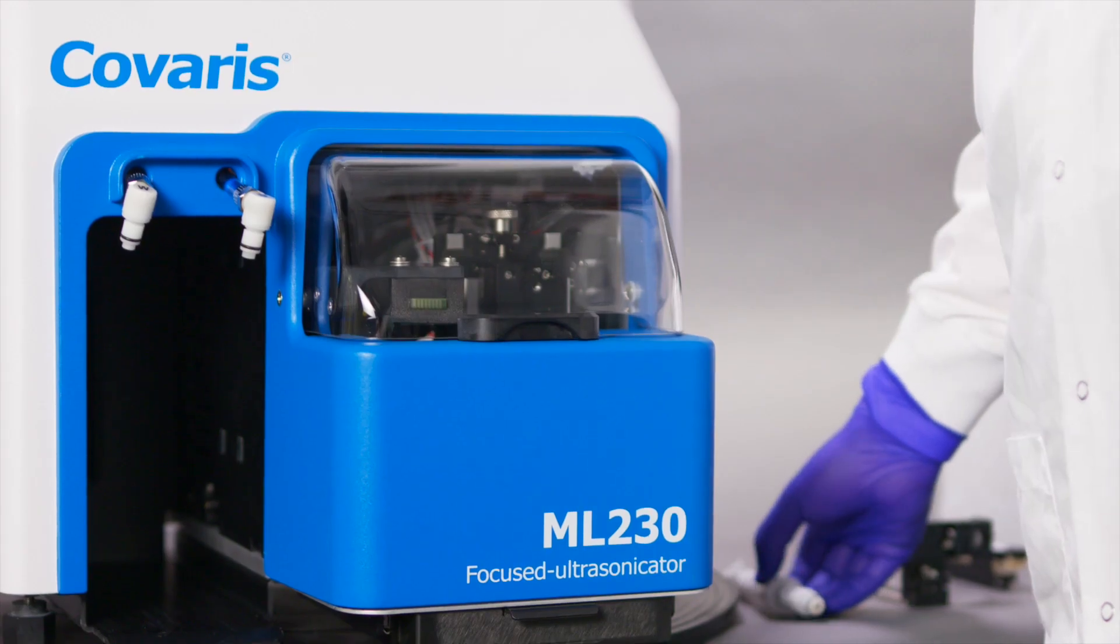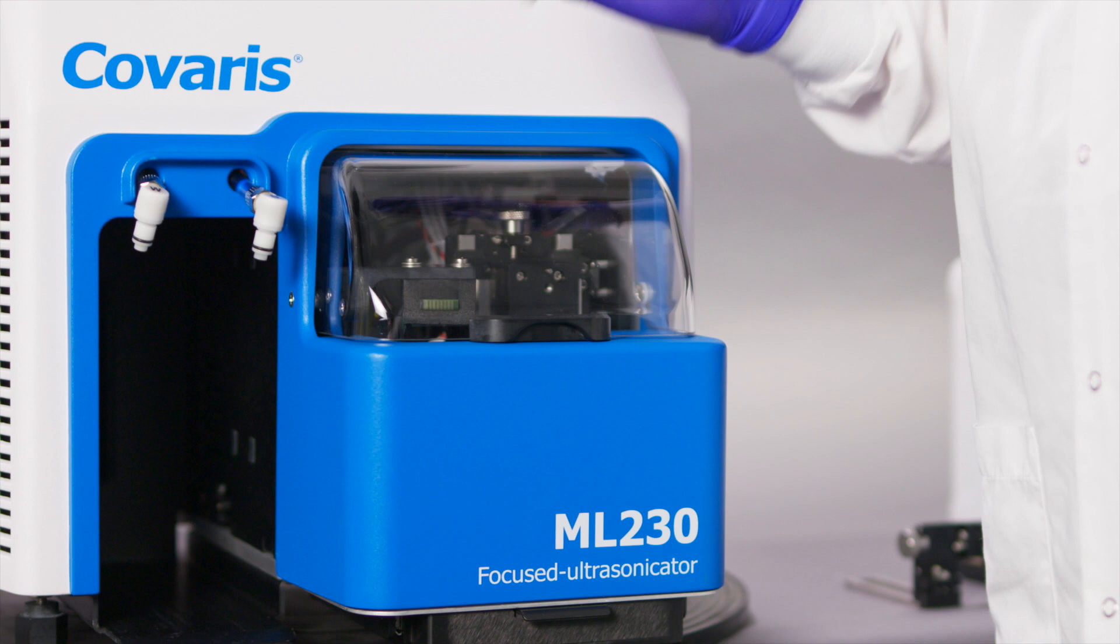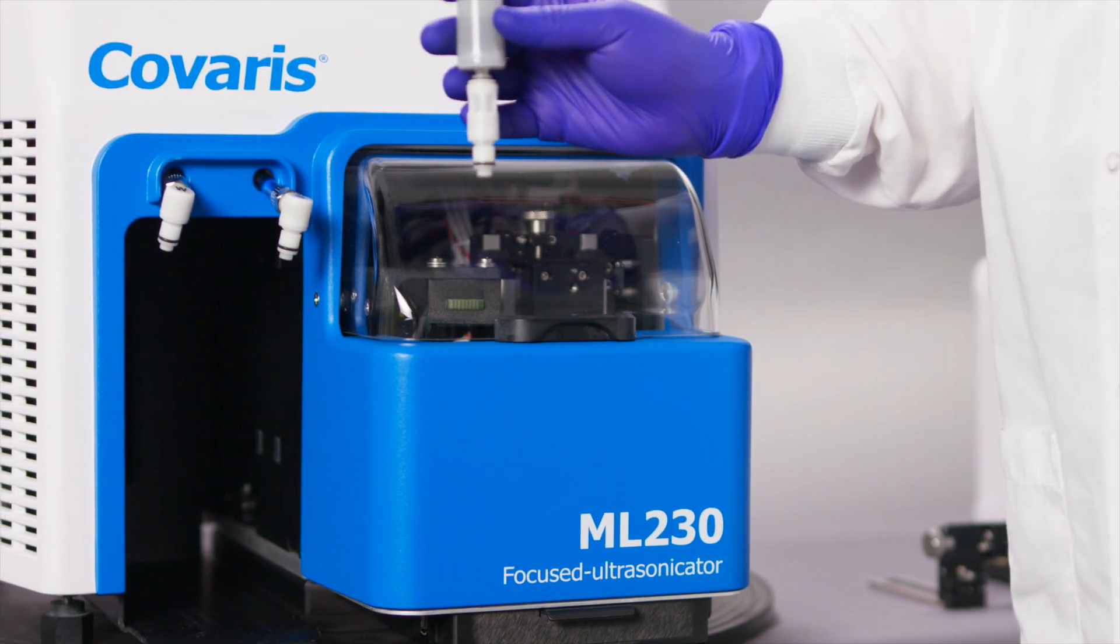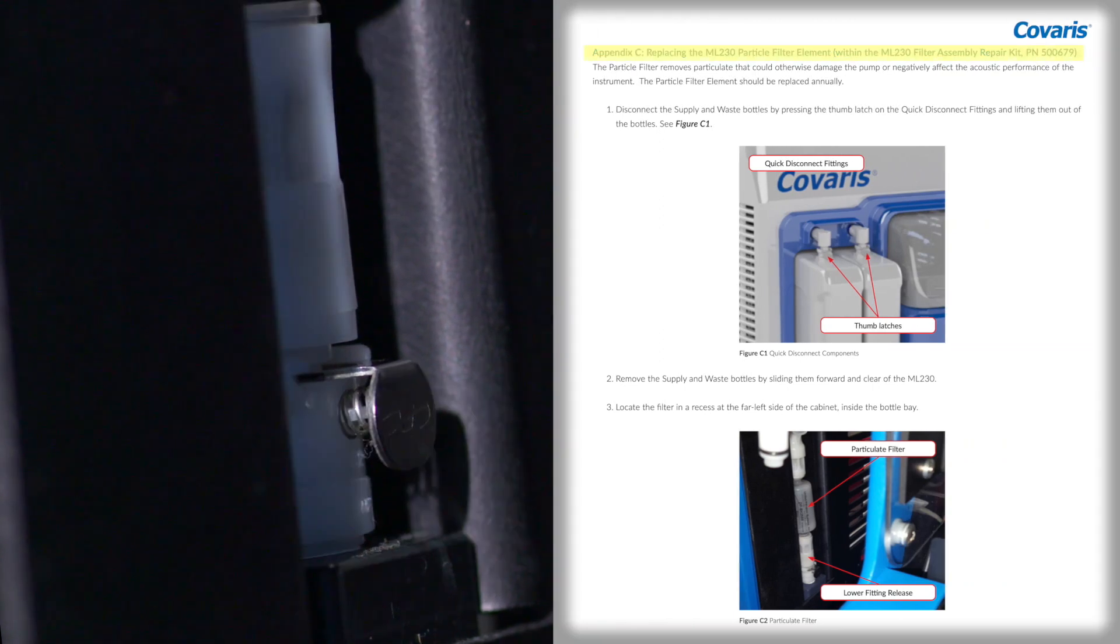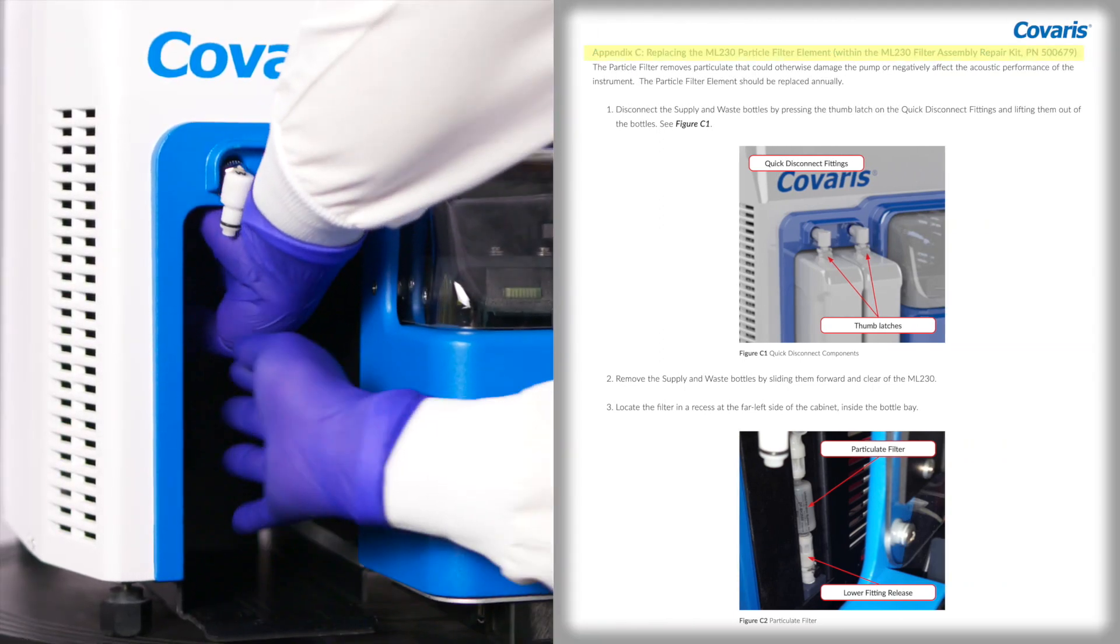Before the supply and waste tanks are connected, check to see that the particle filter is already installed. If not, please refer to the ML230 User Manual for instructions on how to self-install.